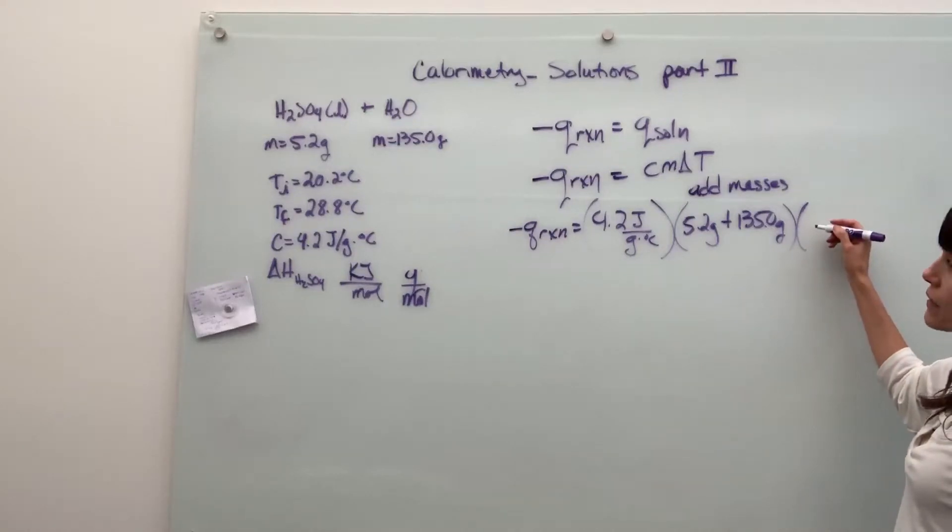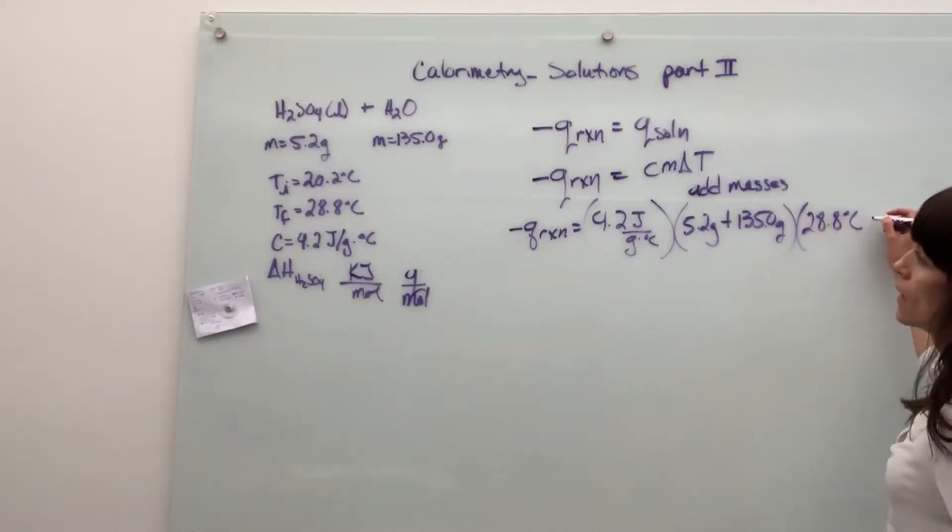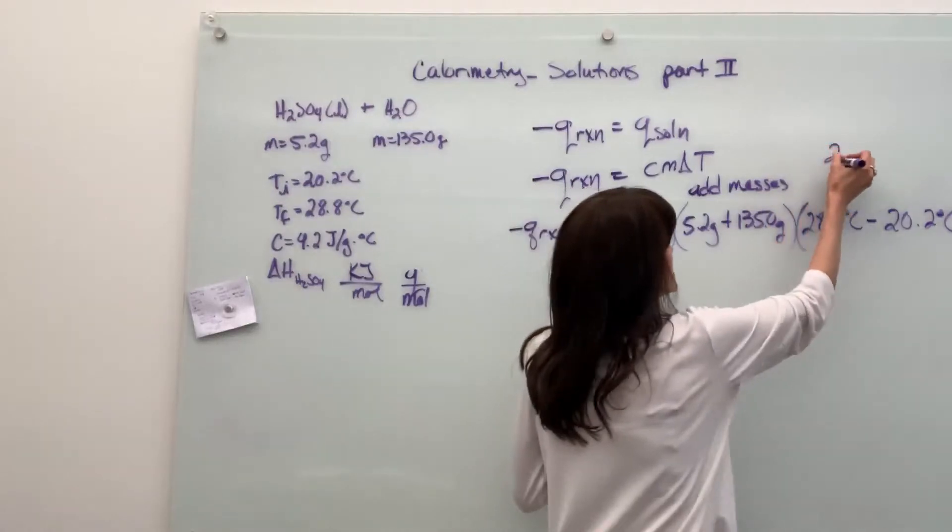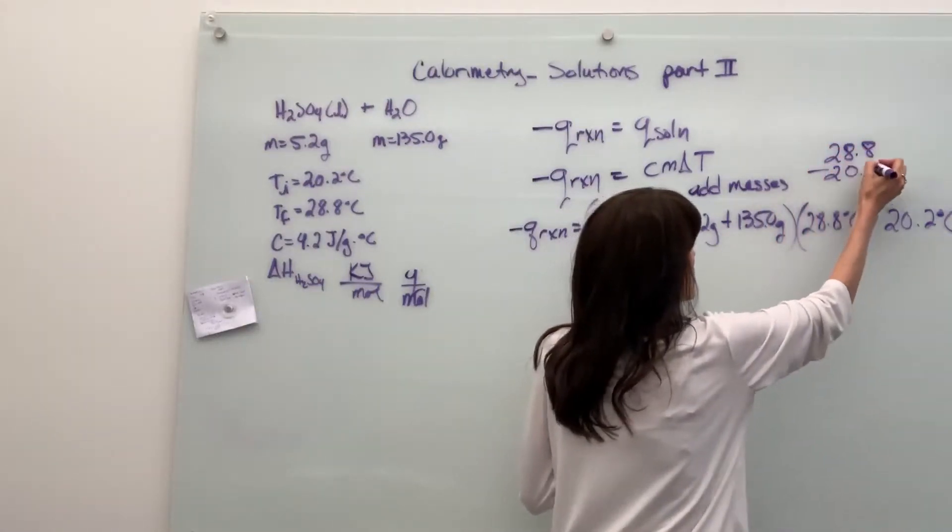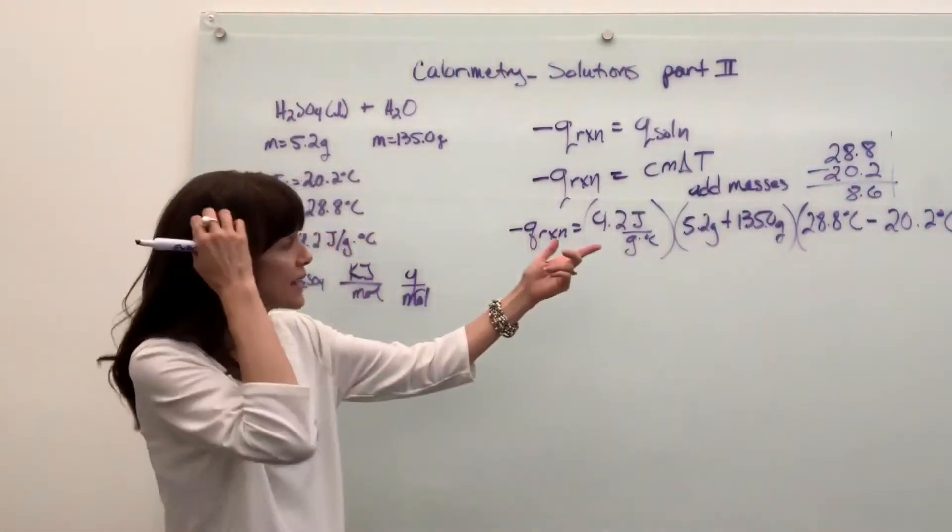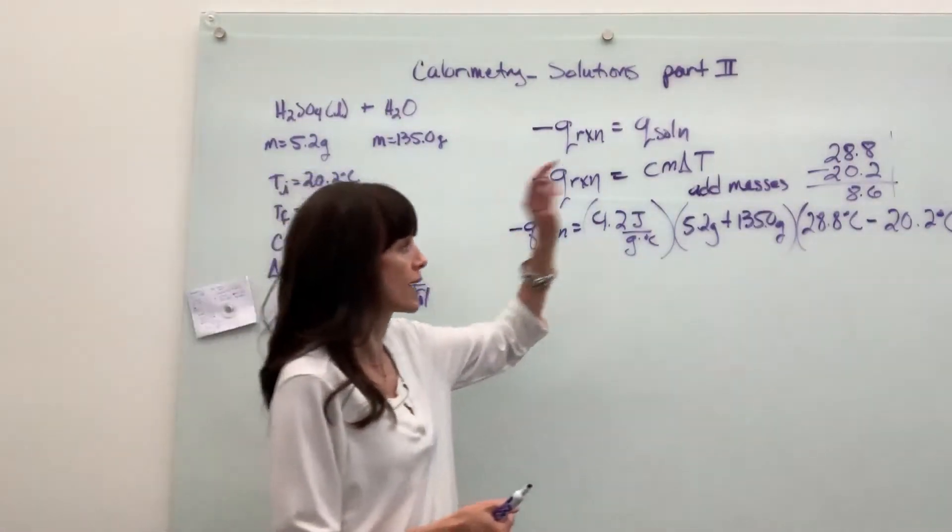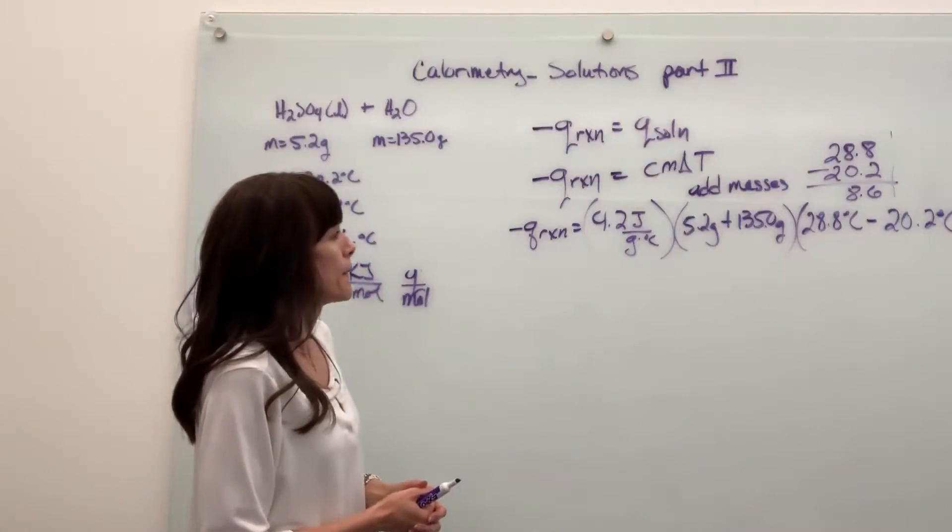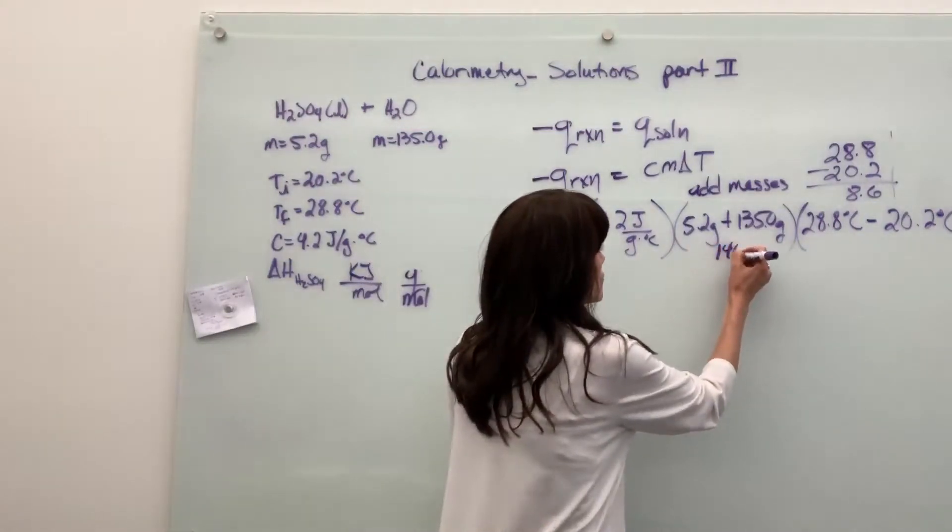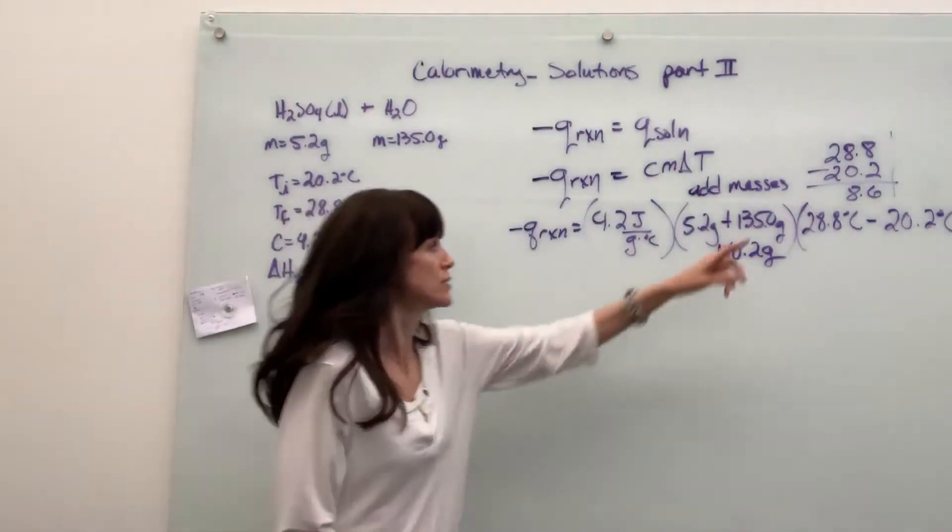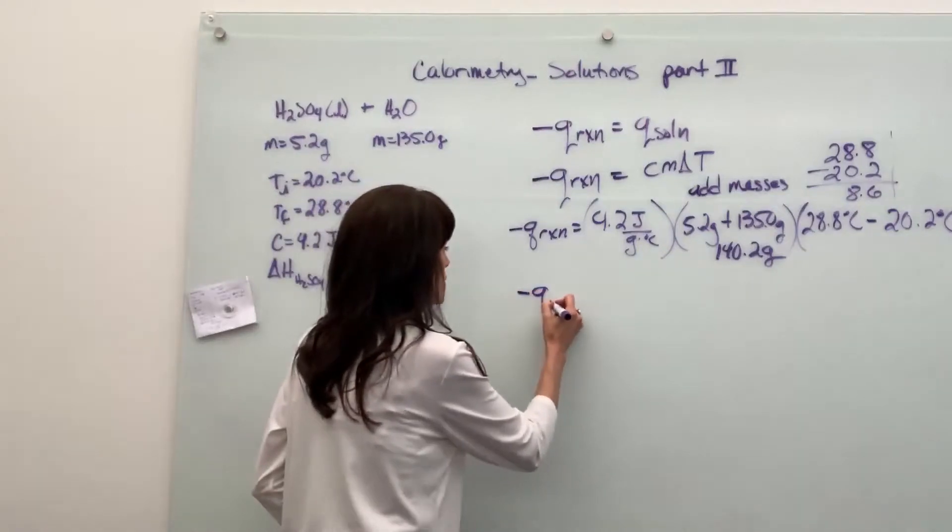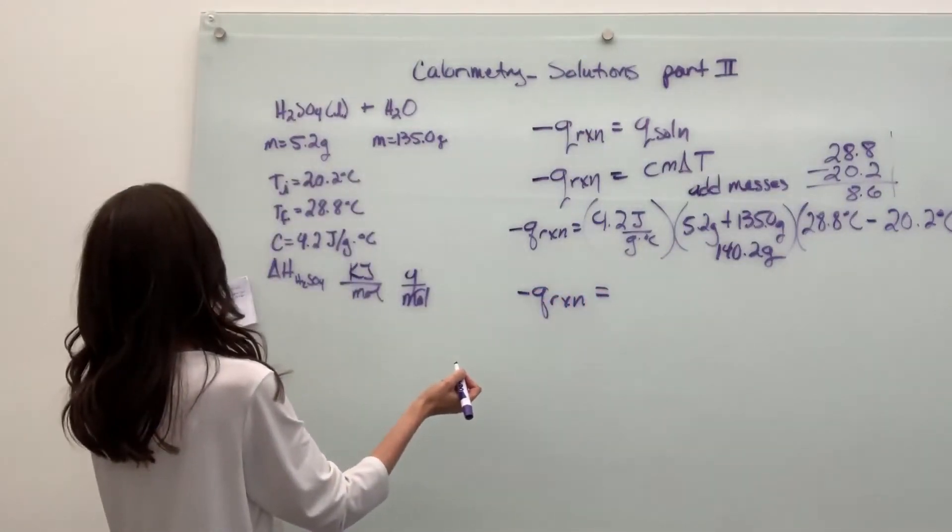Change in temperature final 28.8 degrees C minus 20.2 degrees C. Let's look at our scientific notation. 28.8 minus 20.2 is going to give us 8.6. I truncate at the smallest digit, least digit. That is going to give me two sig figs when we truncate at the hundredths place. If we add right here, also truncating is going to be at the tenths place. This gives me 140.2 grams. So I've got two sig figs, four sig figs, two sig figs. When we multiply, we'll end up with two sig figs.